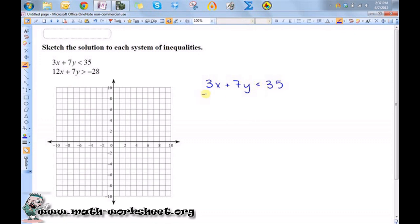So I want to subtract 3x from both sides. So I get 7y is less than negative 3x plus 35. Then I want to divide both sides by 7. So I have y is less than negative 3x over 7 plus 5. So this is my y-intercept and this is my slope.